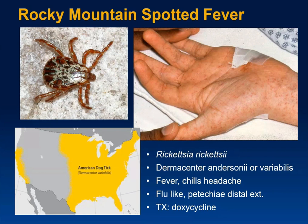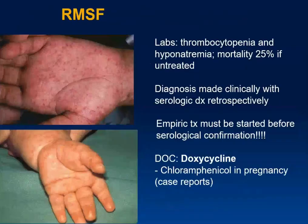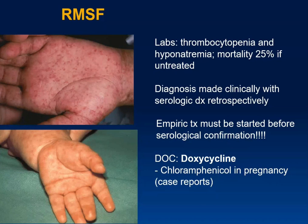The most common place to see Rocky Mountain spotted fever right now is not the Rocky Mountains — it's really more of an East Coast disease. People in North and South Carolina will think of RMSF before anything else in patients who've been outside hiking with a rash. The classic presentation is fever, chills, and headache — similar to COVID. Lab findings include thrombocytopenia and hyponatremia. In untreated patients, mortality can be up to 25%. Treatment of choice is doxycycline.